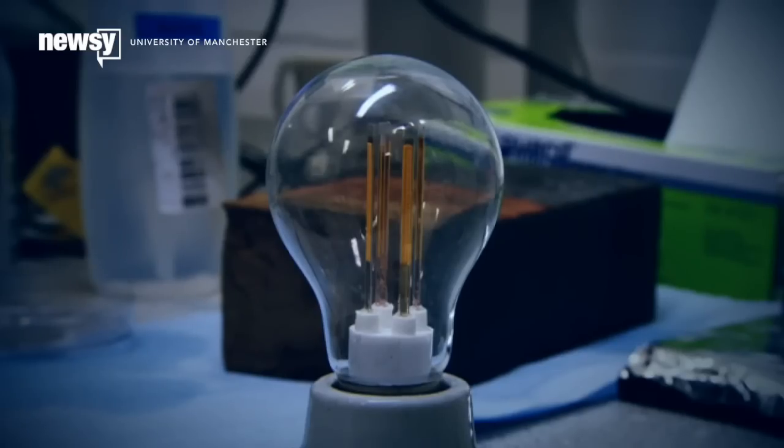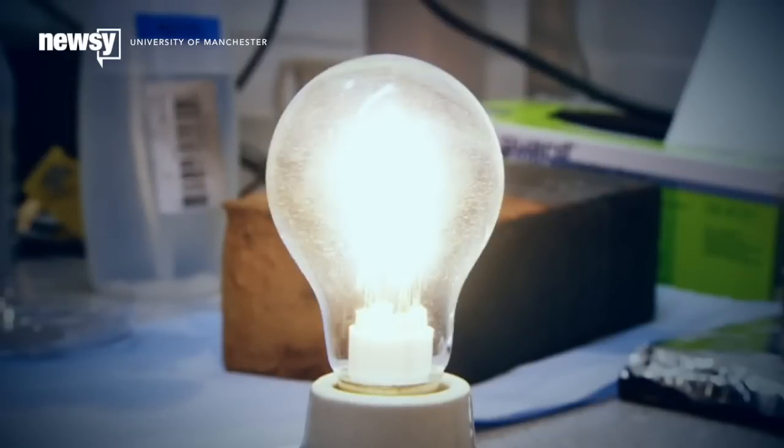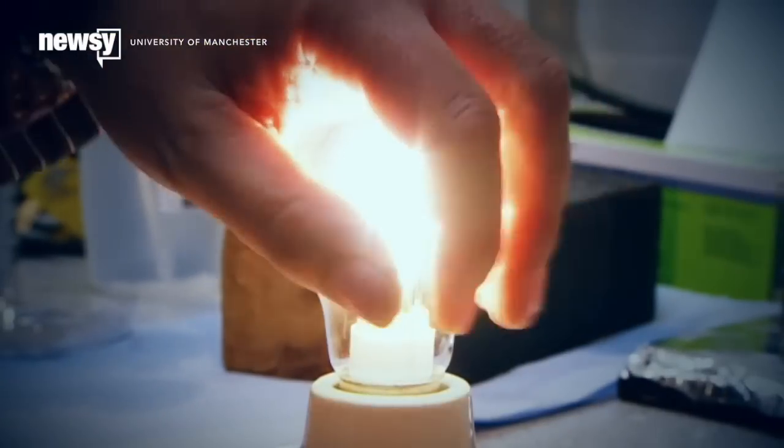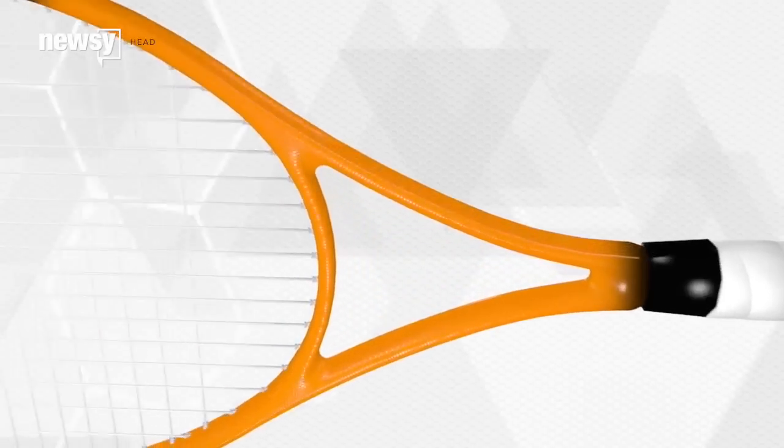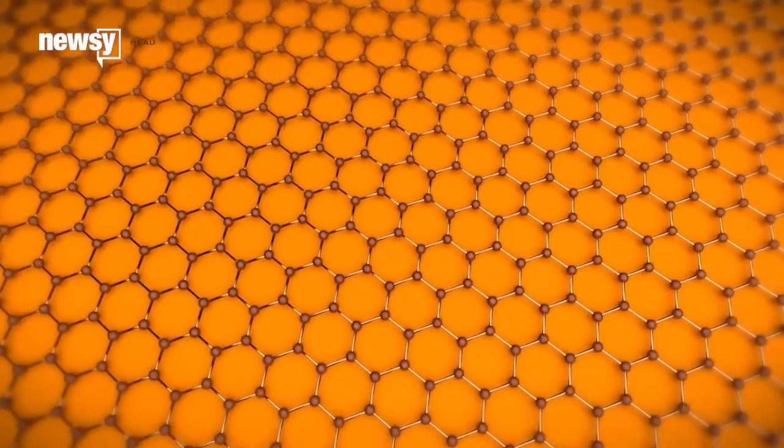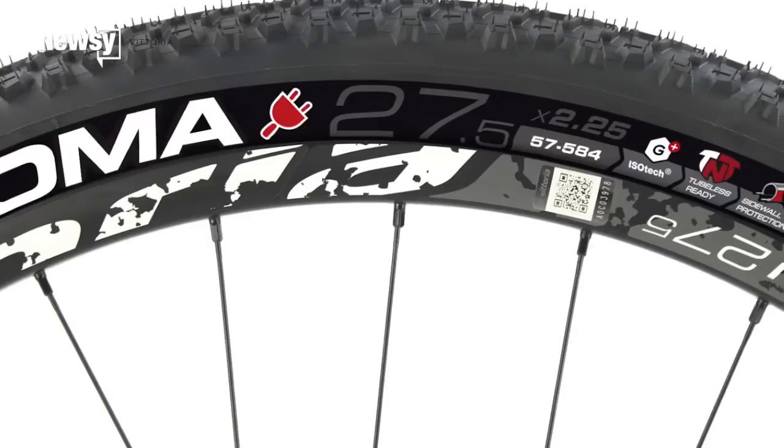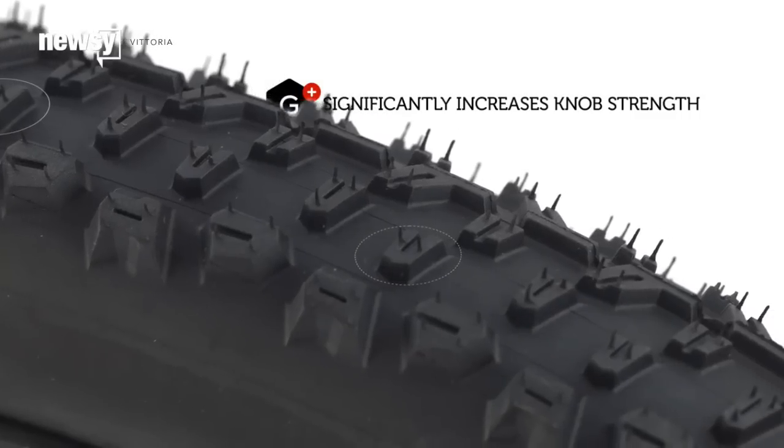Researchers at Manchester U say they're closing in on commercially viable graphene-coated LED light bulbs, which would reportedly run cooler than their non-coated brethren. And some companies are now confident enough in the market to sell you a graphene-imbued tennis racket or bicycle tire that may or may not give you some sort of competitive edge.